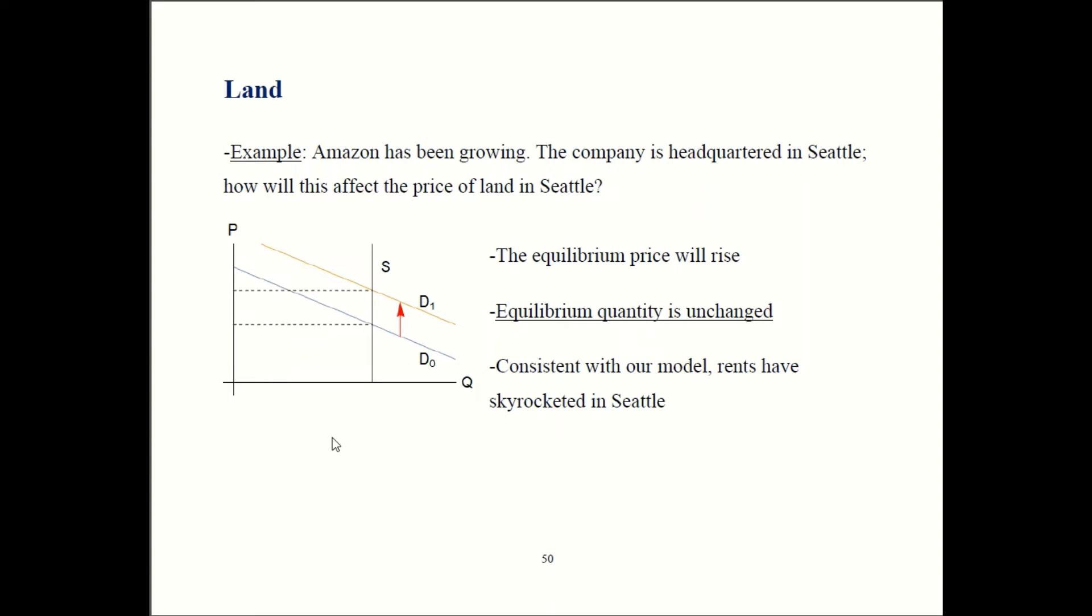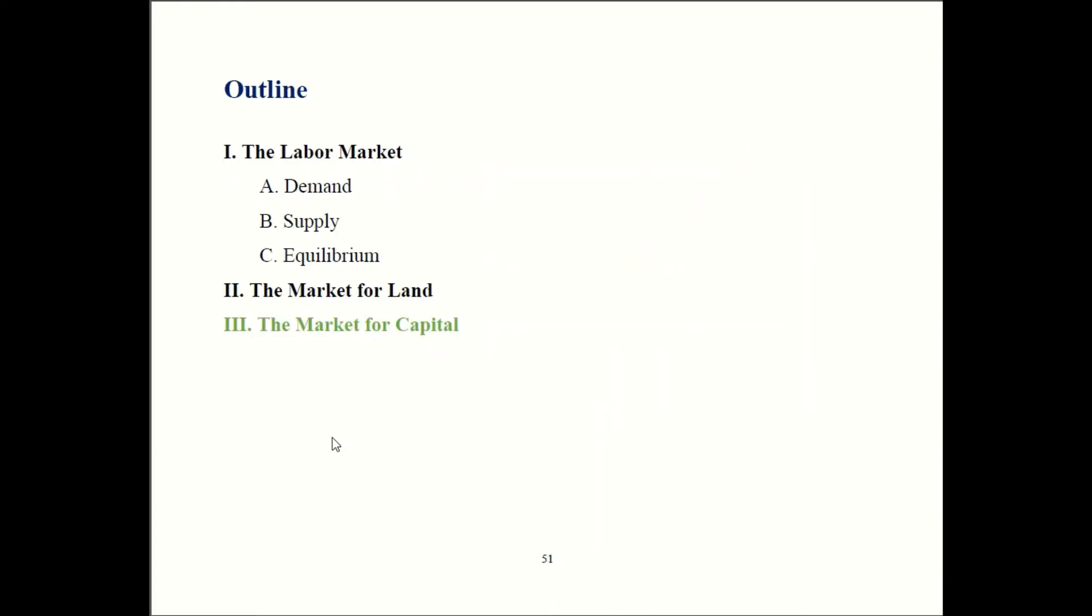Rent is really high in Seattle and it's gotten even more expensive. There have been predictable effects with congestion being worse during rush hour. Just don't try to drive in Seattle during rush hour unless you have a lot of time on your hands. It very much follows the predictions of our economic model. That wraps up our section on the market for land. Very short section because you only look at demand shifts, not supply shifts. Let's finish up our chapter and look at the market for capital in this episode as well.